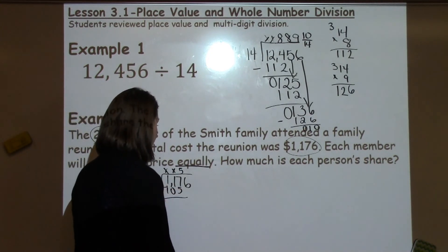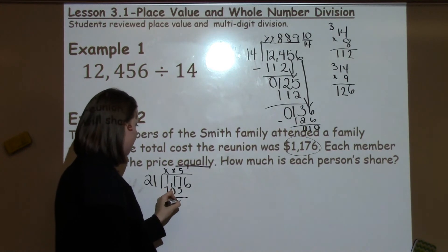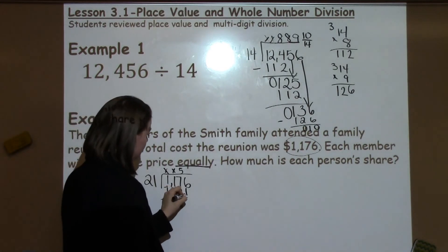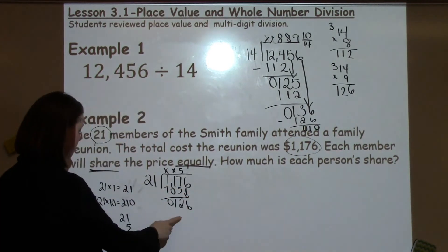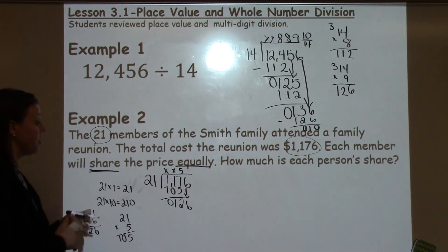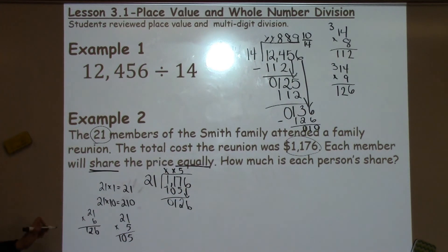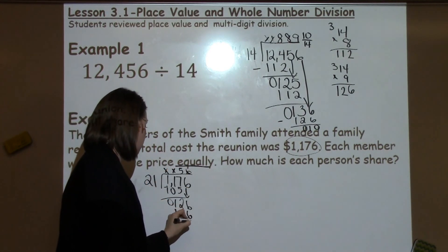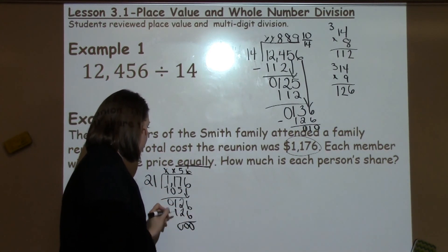5 times 21 is 105. I need to go ahead and subtract. 7 minus 5 is 2. 1 minus 0 is 1, and 1 minus 1 is 0. Go ahead and bring down my 6. Can 21 go into 126? Well, it's a good thing I didn't erase because I've already figured that out over here with 6. 6 times 21 is 126 with nothing left over.